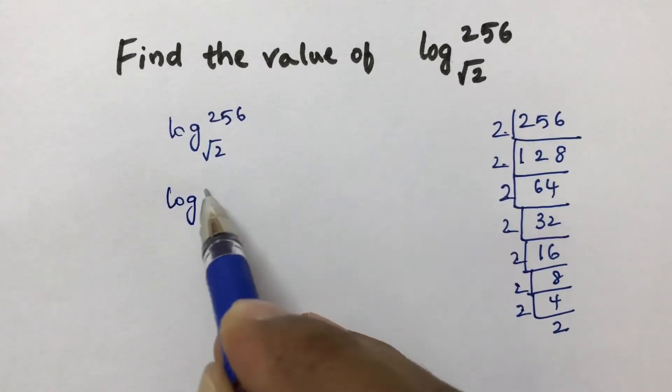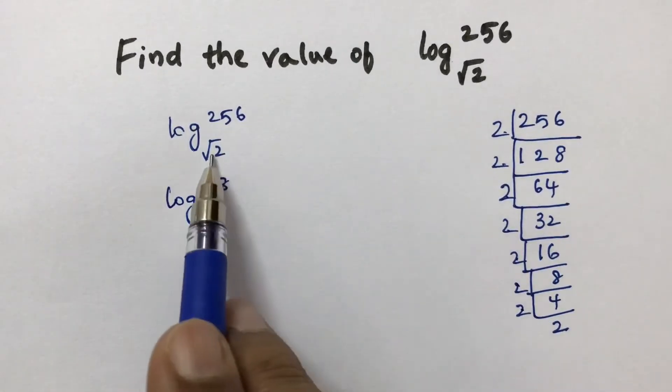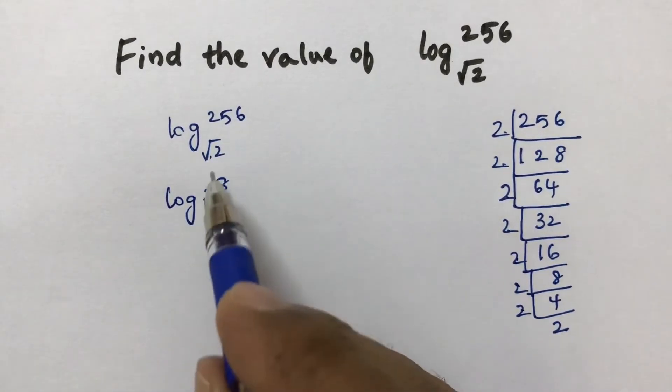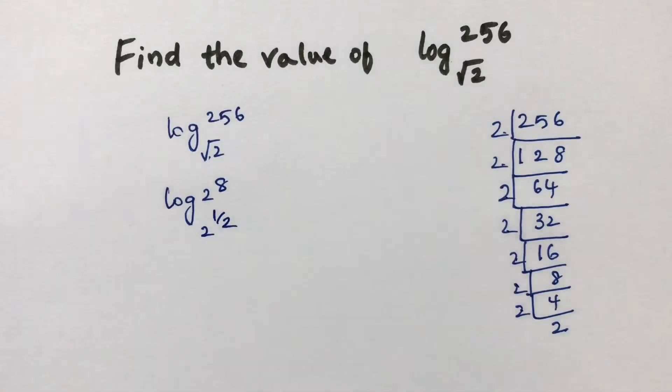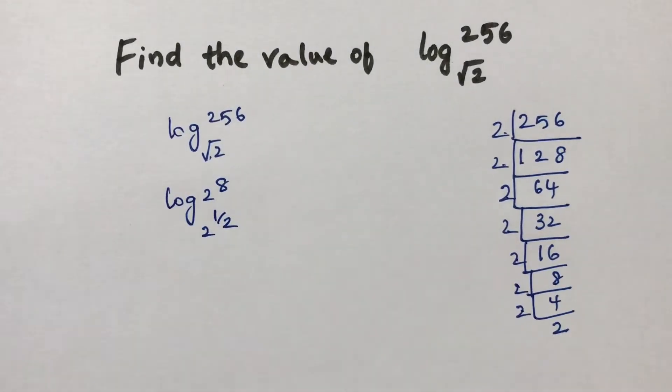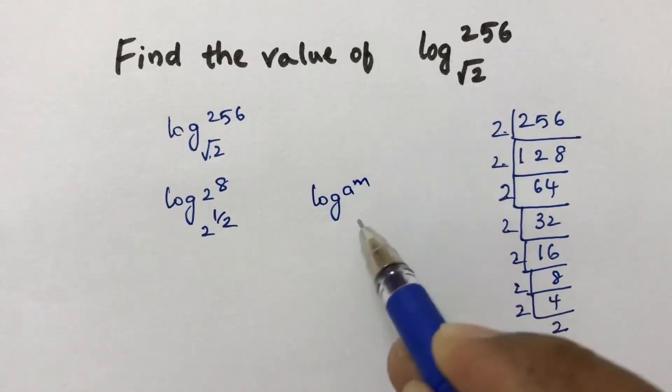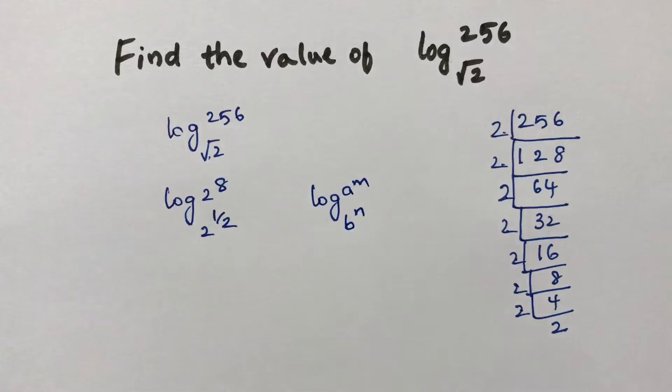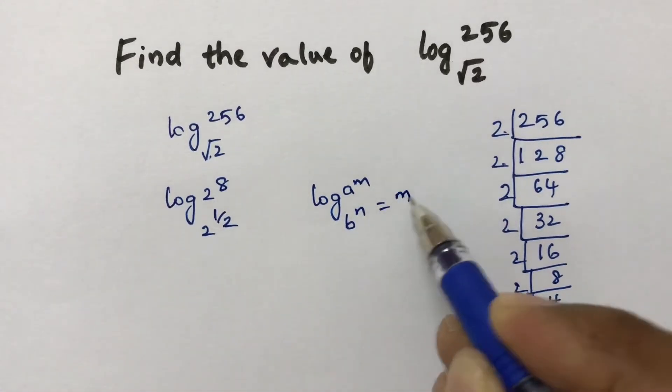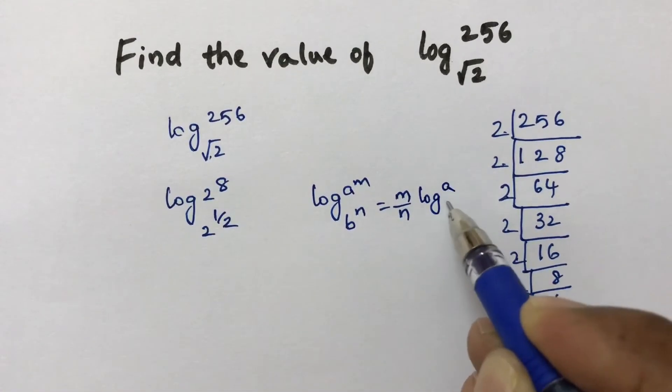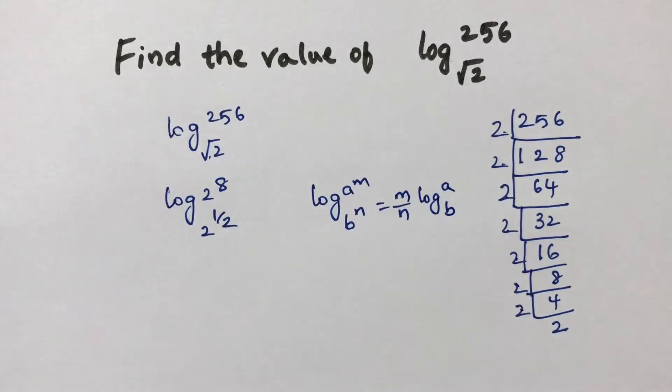So log 2 power 8 to the base root 2, you can write as 2 power 1 by 2. This is in the form of log a power m to the base b power n, which you can write as m by n times log a to the base b.